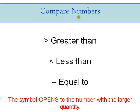We're going to talk about comparing numbers. When we compare numbers, we are basically taking two numbers and seeing which number is the larger quantity or the biggest number. We use these three symbols. Think of an alligator that wants to eat the biggest number. The greater than symbol means the number on this side is greater than the number on that side, the less than symbol opens to the right, and when both numbers are the same it's equal to. The symbol always opens to the number with the larger quantity.